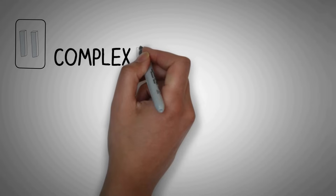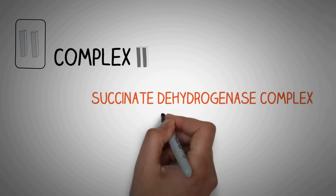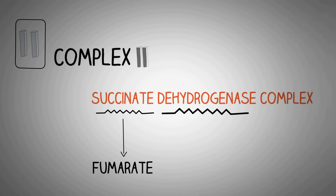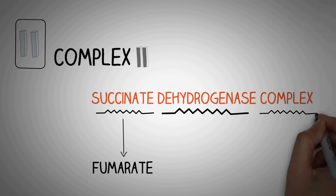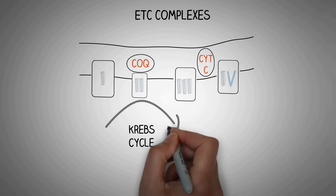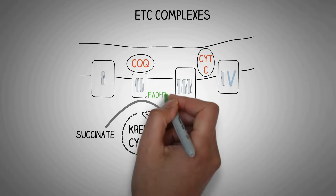Complex 2 of the electron transport chain is called succinate dehydrogenase complex. It removes hydrogen from succinate and oxidizes it to fumarate, which is a step of the Krebs cycle. It is called a complex because it also contains iron-sulfur clusters. Complex 2 is a part of the Krebs cycle and catalyzes the oxidation of succinate to fumarate, in which the reducing equivalent FADH2 is produced for donation of electrons in the electron transport chain.